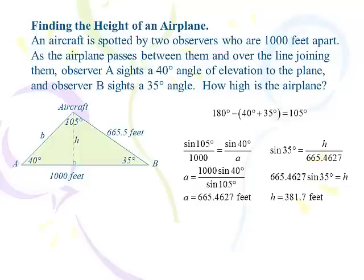So, there's a right triangle there on the right-hand side. The hypotenuse is 665.5. I leave all in my calculator. So, the sine of 35 is opposite over hypotenuse, h over 665.5. So, sine of 35 equals h over 665.4627. And then I multiply both sides by the hypotenuse, and I get h to be 381.7.